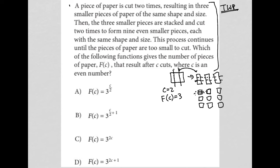So is it true for choice A that if C equals two, F(C) is three? Well, actually it is. Because if C equals two here, this becomes three to the one, which makes it equal to three. So I like that.